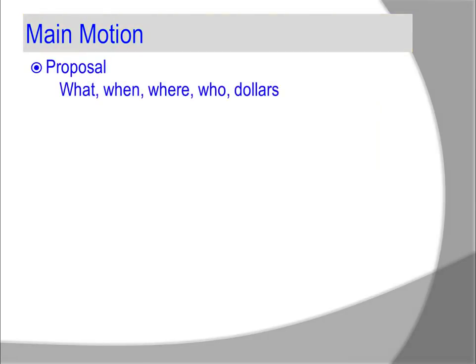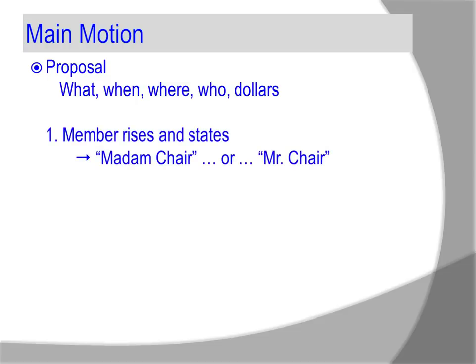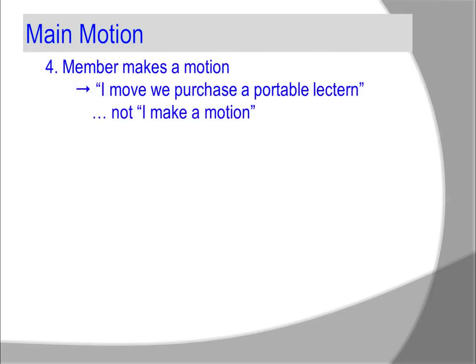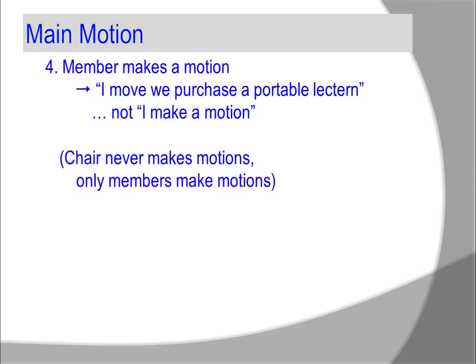What are motions? What is a main motion? A main motion is a proposal about what, when, where, who, and dollars. A member rises and states 'Madam Chair' or 'Mr. Chair,' then waits to be recognized — does not speak, simply waits. The chair recognizes the member: 'John Arbuckle has the floor.' The member makes a motion: 'I move we purchase a portable lectern' — not 'I make a motion.' The chair never makes motions; only members make motions.